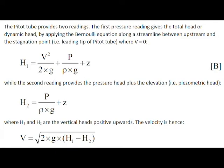The pitot tube provides two readings. The first reading gives the total head, or dynamic head, by applying the Bernoulli equation along a streamline. The second reading provides the pressure head plus the elevation, also called piezometric head. In each case, the head h1 and h2 is the vertical head positive upwards.